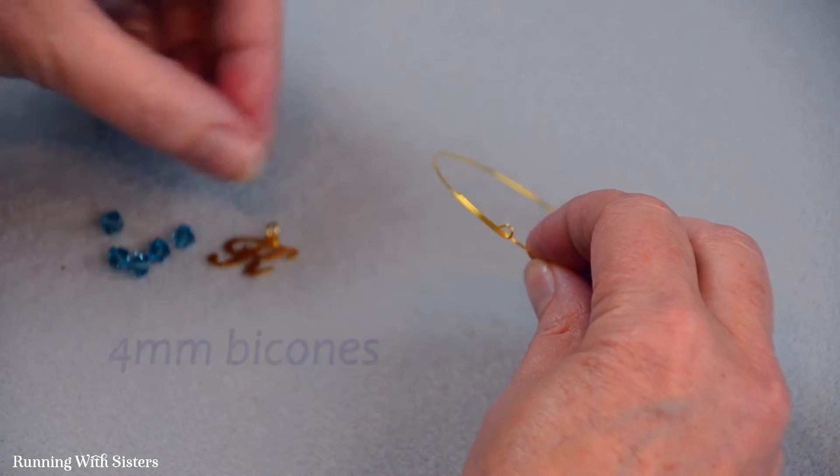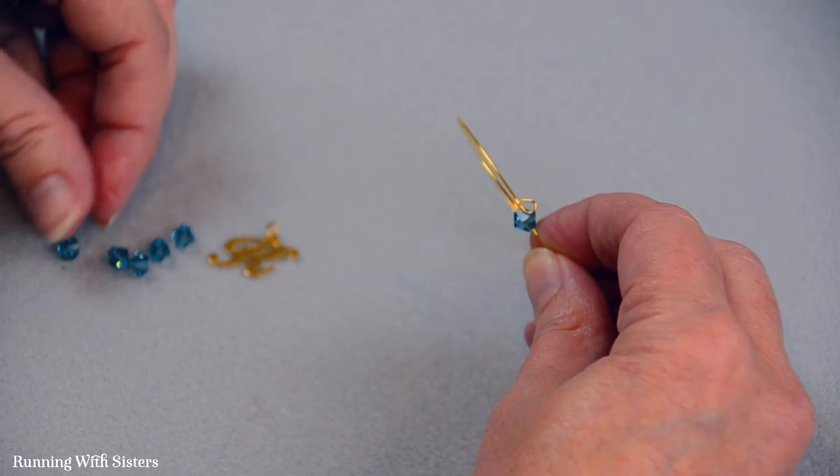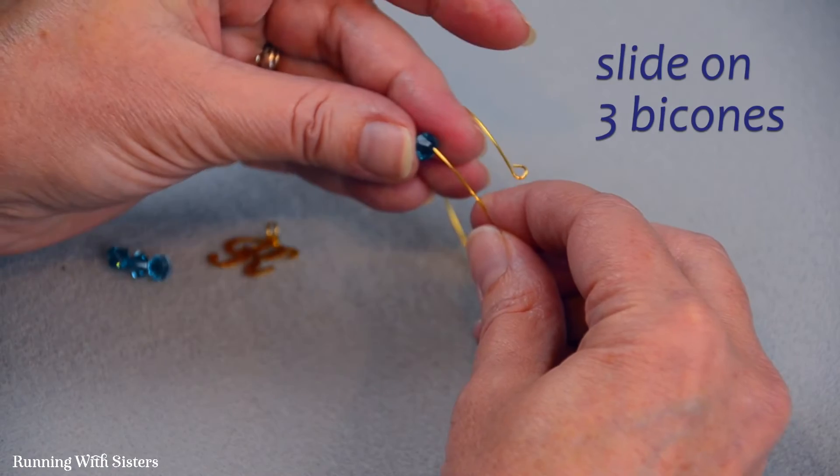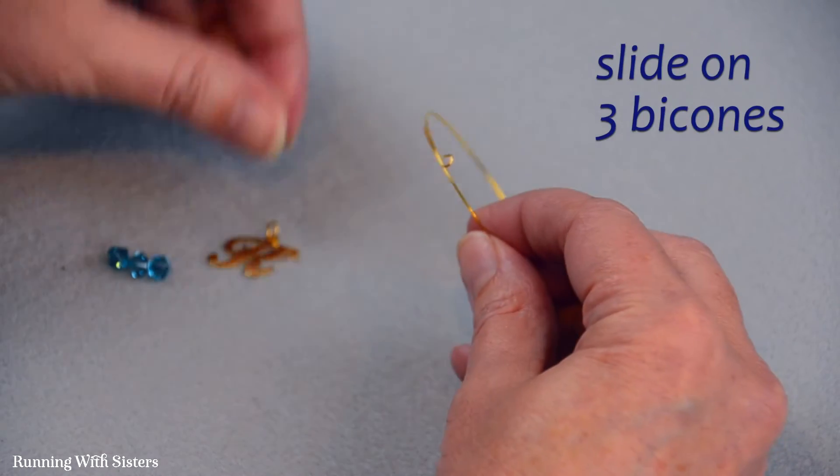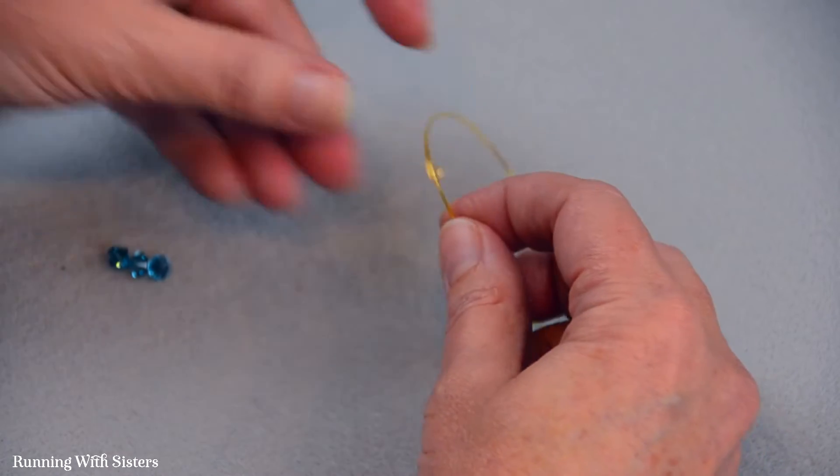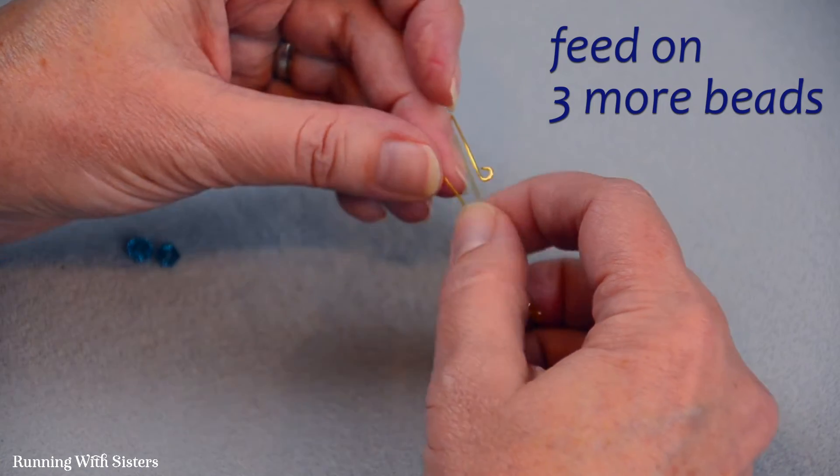So next I'm going to put on some beads. I have some four millimeter bicones here in this pretty kind of blue topaz color. I'm going to put three of those on. And then I'm going to put on a charm that's in the same metal as our memory wire. And then I'm going to feed on three more bicones.